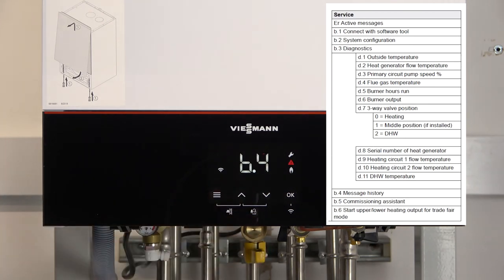Other things we can find in the service menu. If we go to B4, for example, we can see the previous five error messages that the boiler's displayed.